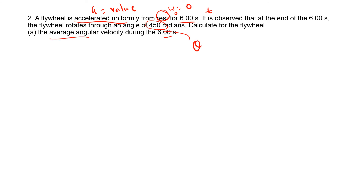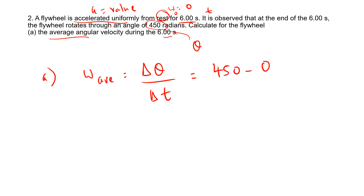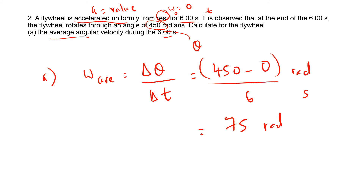Talking about angular velocity means the rate of change of angular displacement. From the definition, average angular velocity omega_avg equals delta theta divided by delta t. Delta theta is 450 radians (rotating from 0 to 450 rad), and delta t is 6 seconds. So omega_avg equals 450 divided by 6, giving 75 rad s⁻¹. This is the average angular velocity.